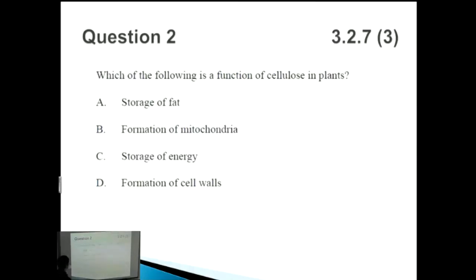Let's look at the next question. Which of the following is a function of cellulose in plants? So cellulose is a complex carbohydrate that is found in plant cell walls, and when we ingest that as humans, we can't actually digest that. Let's go through some of the answers. Is it storage of fat? Well, no, not really. So that's a red herring answer because it's got nothing to do with the storage of fat at all.